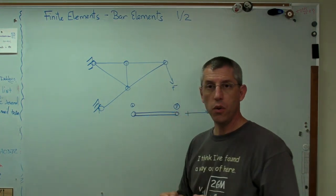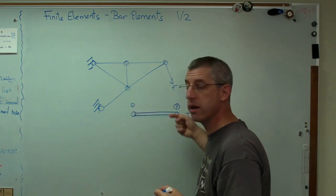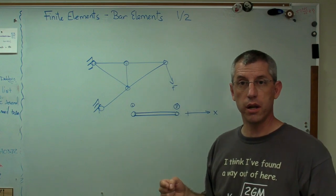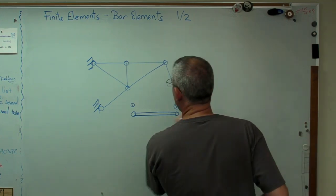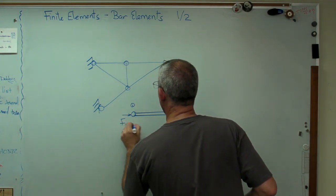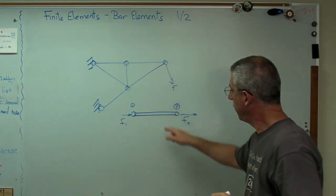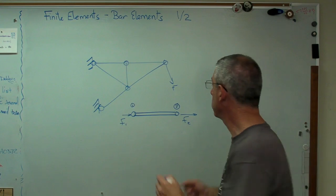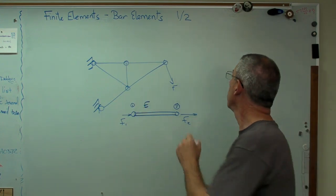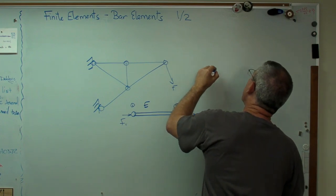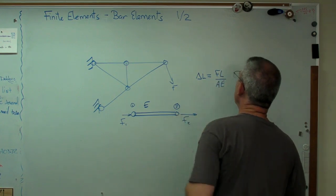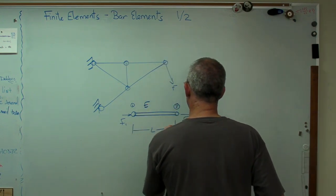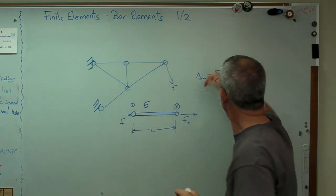Since these are hinges, there's no way to get a force into this bar any other way than along the axis. As long as it's pin-joined, the forces in the truss element have to go along the axis. I can have a force at point one and a force at point two. That's everything I need to describe that bar except it would help to have an elastic modulus E. Since displacement change in length of a bar is F*L over A*E, I need to know the length L and the cross-sectional area A.